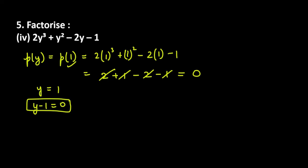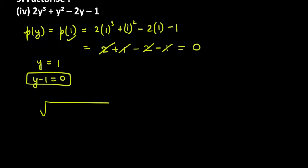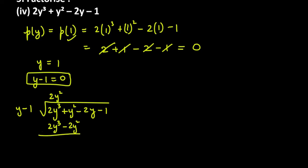Now we'll divide the polynomial by the first factor. So we divide 2y cube plus y square minus 2y minus 1 by y minus 1. To make y into 2y cube, multiply by 2y square. Multiply 2y square by y to get 2y cube, and 2y square by minus 1 to get minus 2y square. After sign change: 2y cube cancels. Then y square plus 2y square gives 3y square.